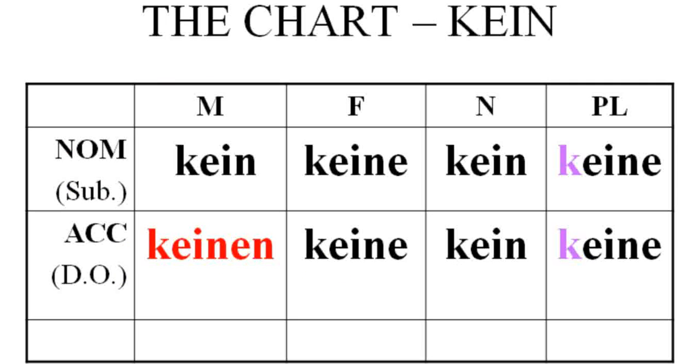So, the kein. We're going to negate nouns. The kein chart is very reminiscent of the ein chart. So if you recall the endings, perhaps from me, blank, so no ending, e-e, blank, e-e.